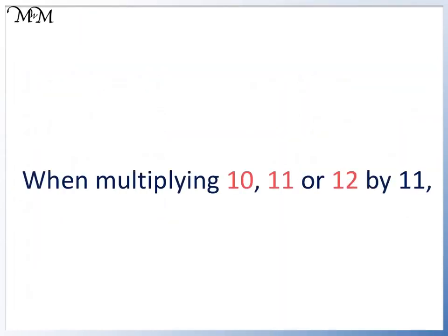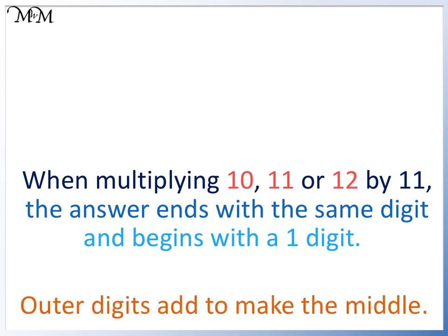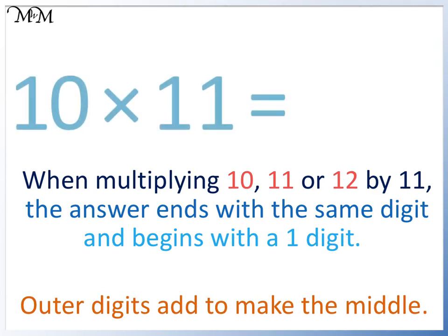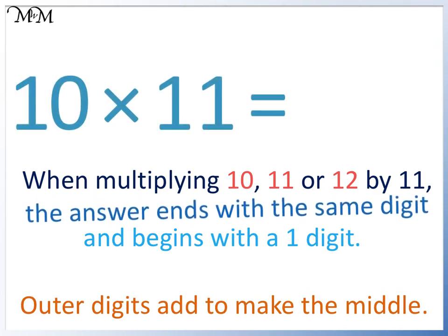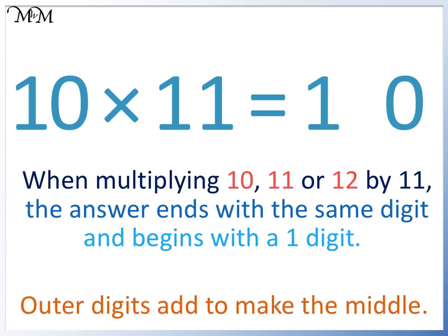When multiplying 10, 11, or 12 by 11, the answer ends in the same digit and begins with a 1. The outer digits then add to make the middle digit. So with 10 times 11, the answer ends in 0, begins with a 1, and 1 plus 0 equals 1 — so 10 times 11 equals 110. It is easiest to simply add a 0 to the end of 11 to make 110.